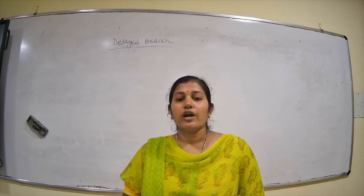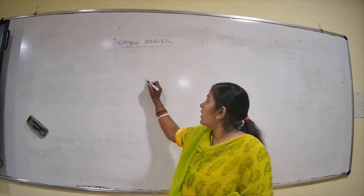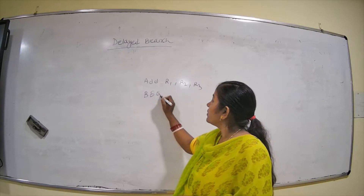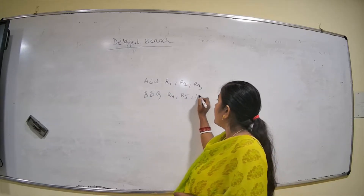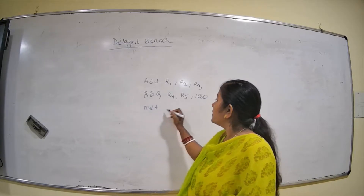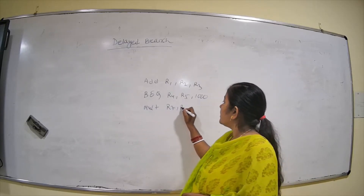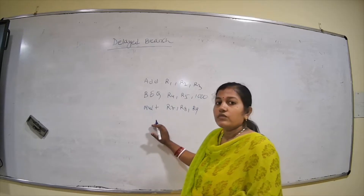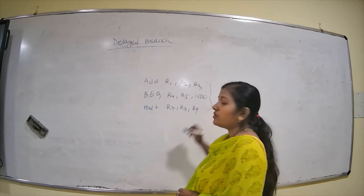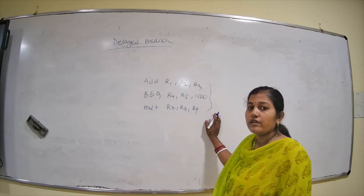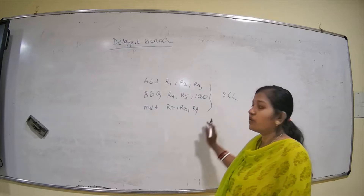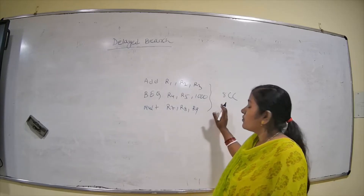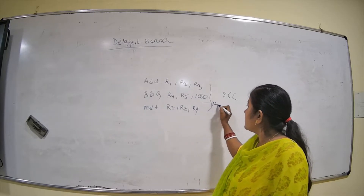The independent instruction we can put after the branch instruction. Let's say: ADD R1, R2, R3; branch equal to R4, R5, 1000; and multiply R7, R8, R9. If you draw the time phase diagram, it will take 8 clock cycles because of the one stall.